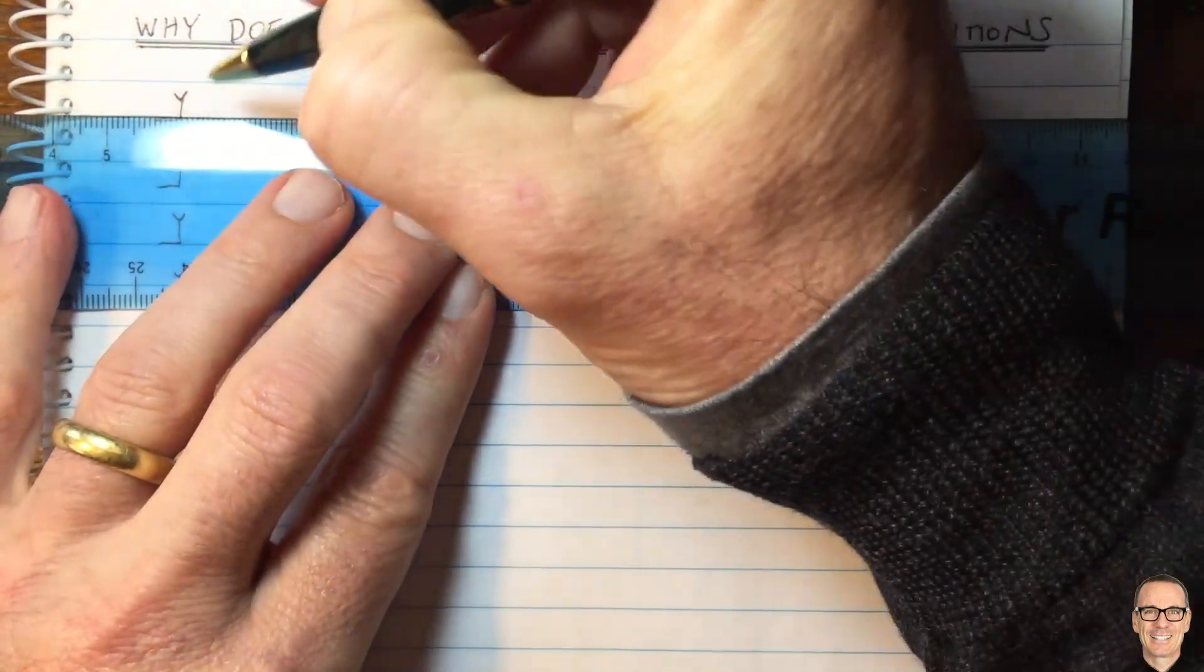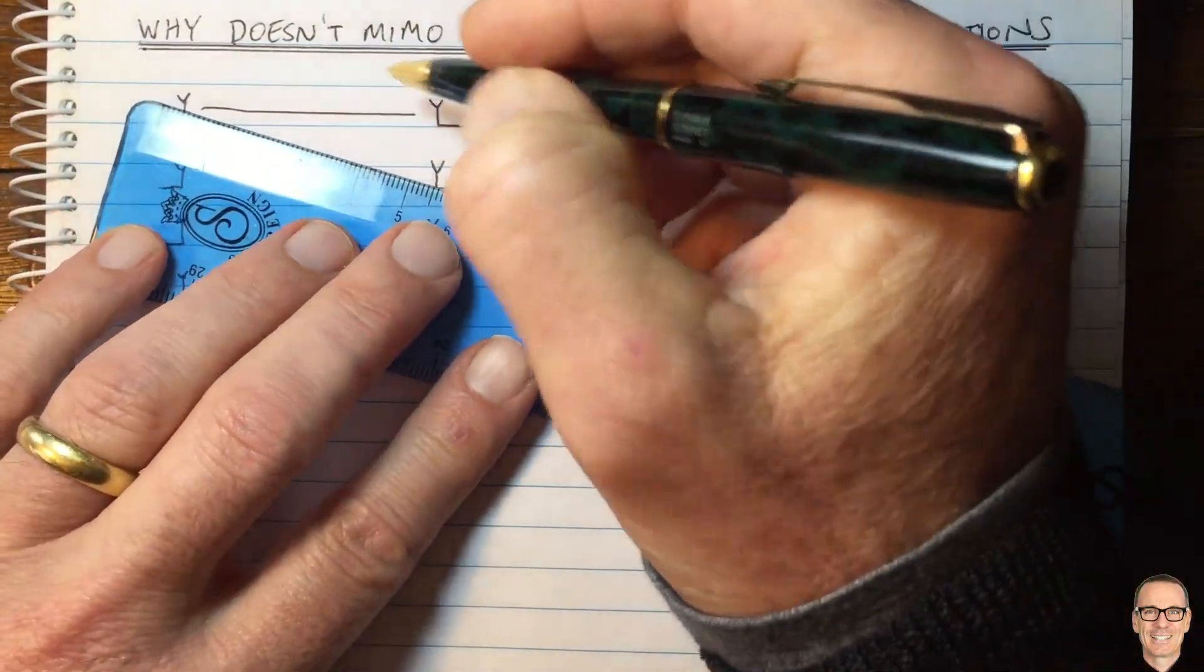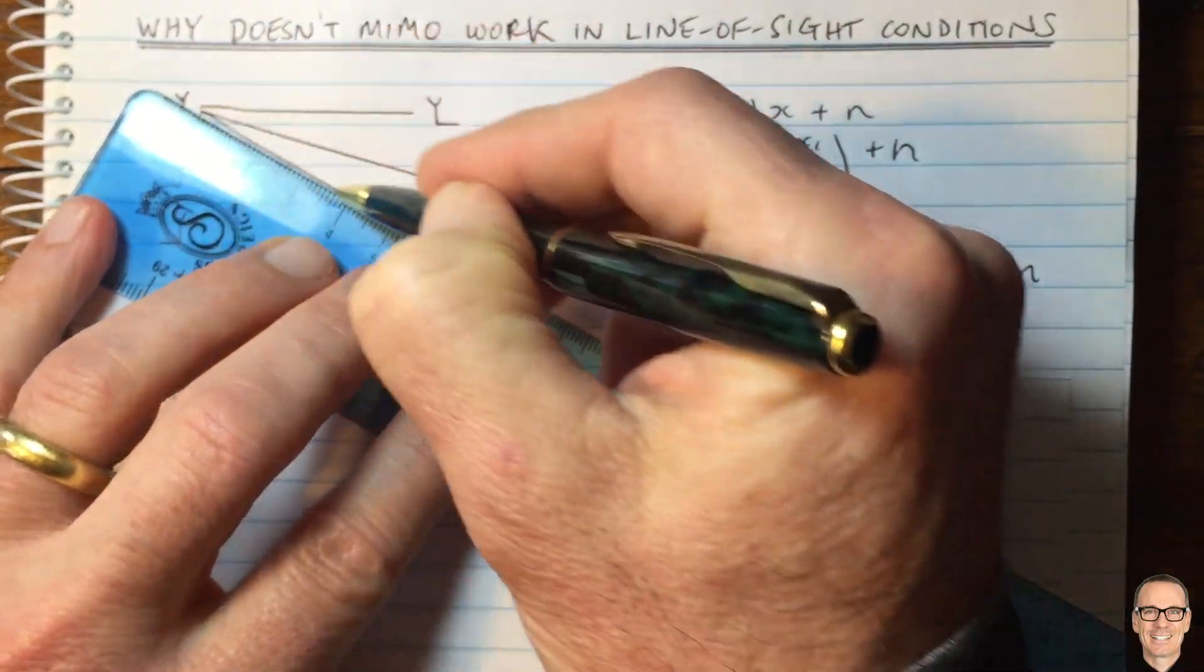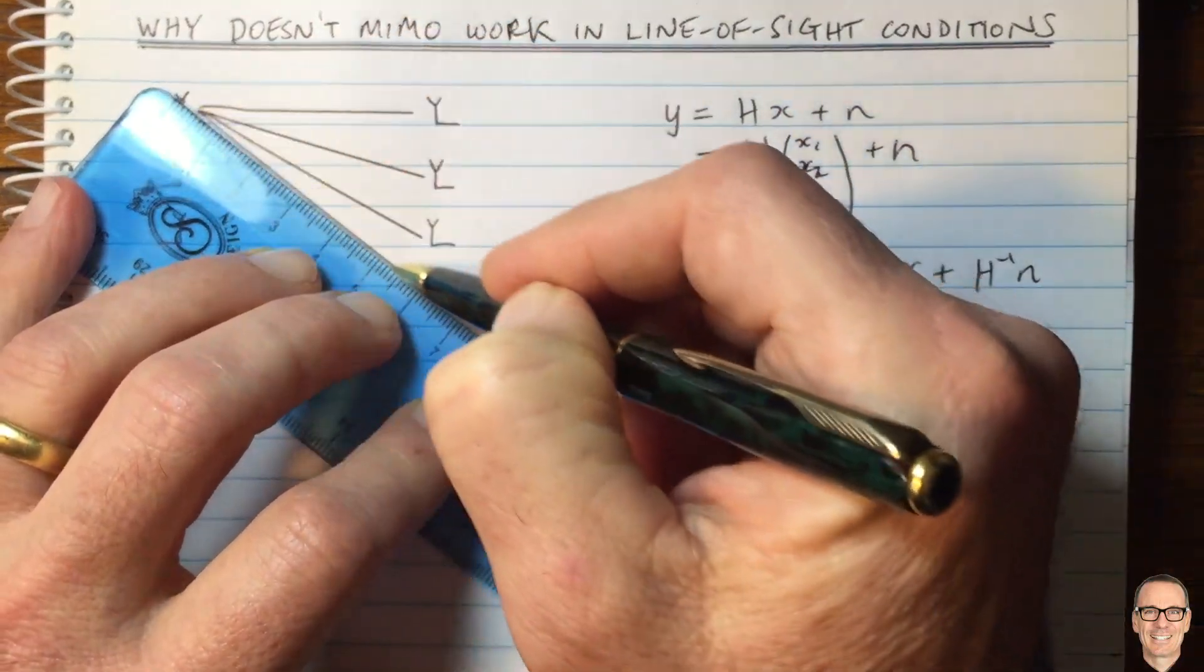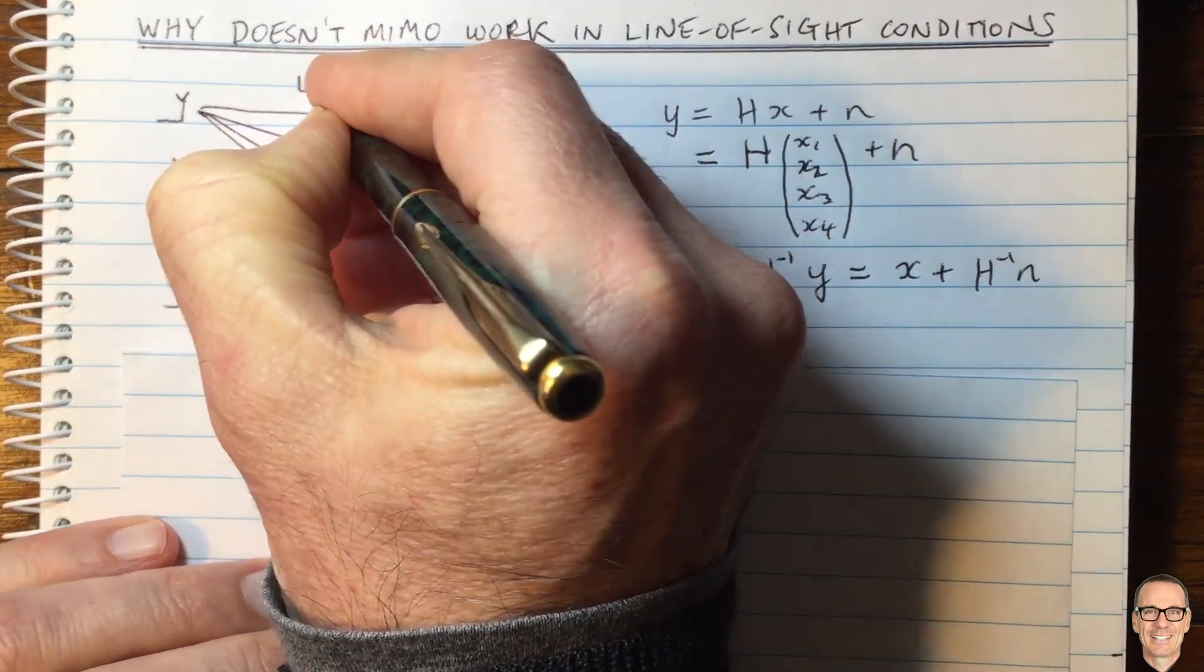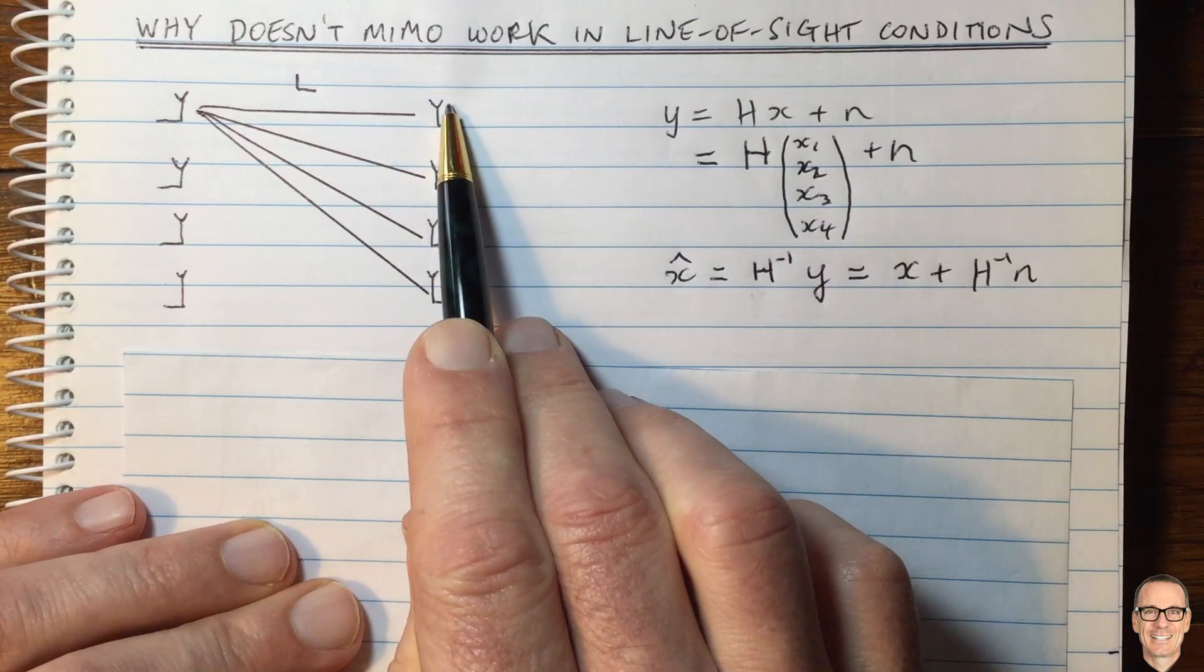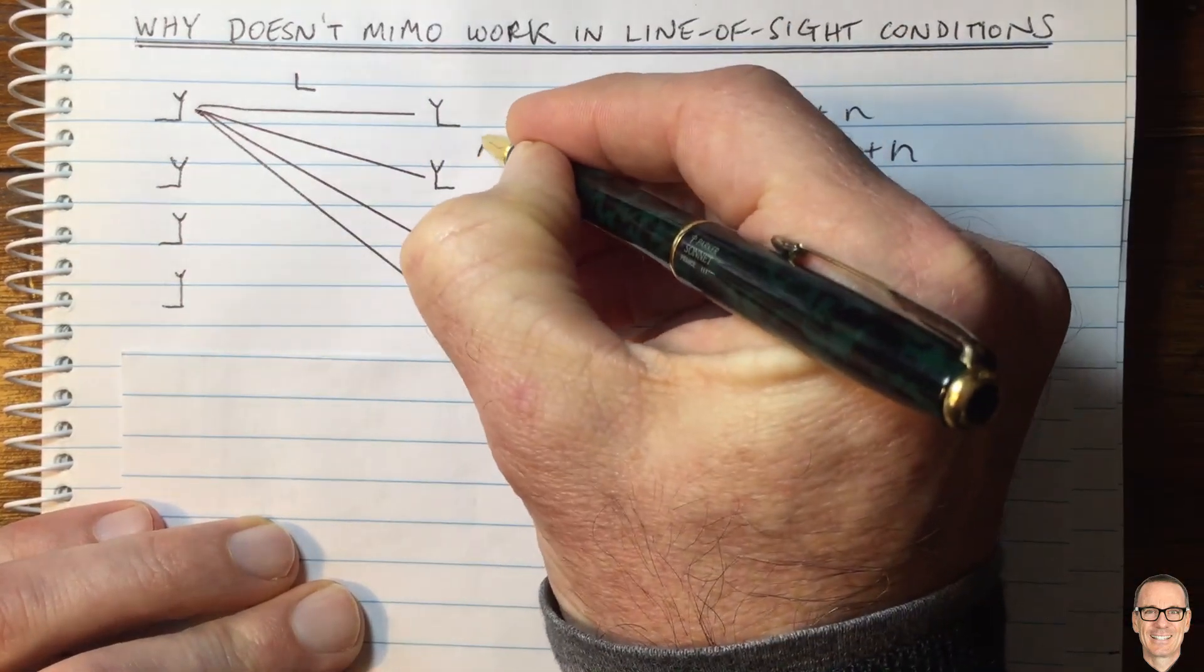We have a path coming from the first transmit antenna to this receiver, another one to this receiver, another one to this one, and so on. These paths are actually different lengths. Even though the total length, the distance between the transmitter and receiver, we'll call that capital L, might be very long, and these antennas might be closely spaced, we'll call that delta,